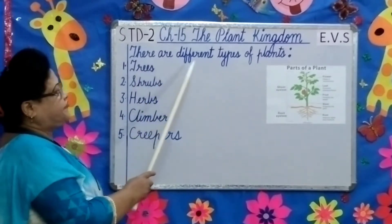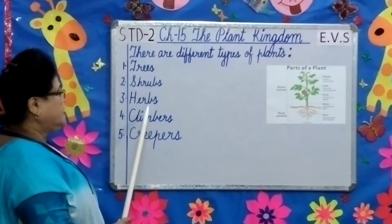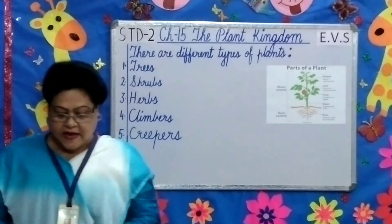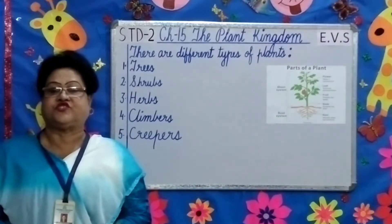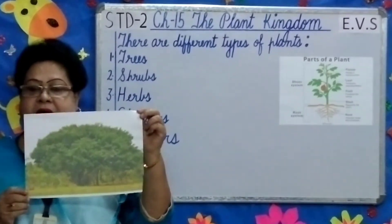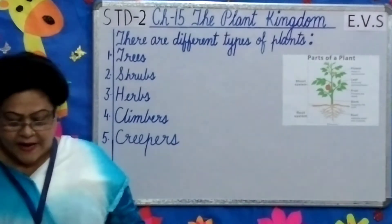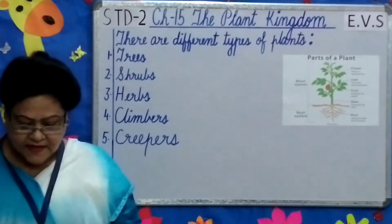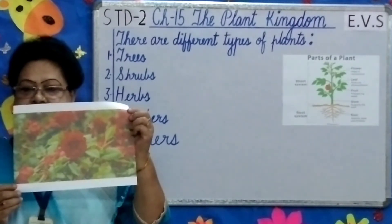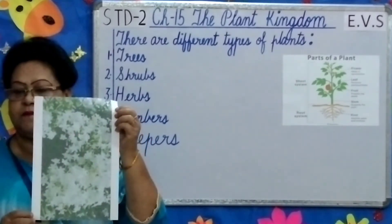There are different types of plants: trees, shrubs, herbs, climbers, and creepers. Trees are very big and strong plants, such as banyan and neem. Shrubs are small and bushy in nature, such as the rose plant and jasmine plant.